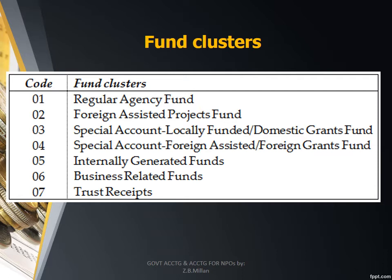Another unique characteristic of government accounting is what we call fund clusters or fund clustering. In government accounting, the books of accounts are maintained by fund cluster — that is, according to the types of funds being accounted for. The fund types and their codes are: 01 for regular agency fund, 02 for foreign assisted project funds, special account locally funded domestic grant fund, special account foreign assisted foreign grant fund, internally generated funds, business related funds, and trust receipts.